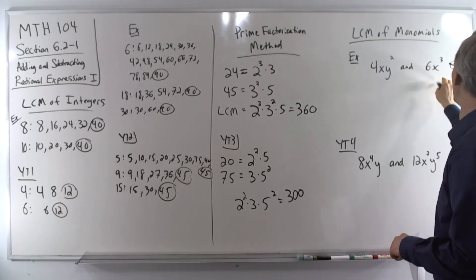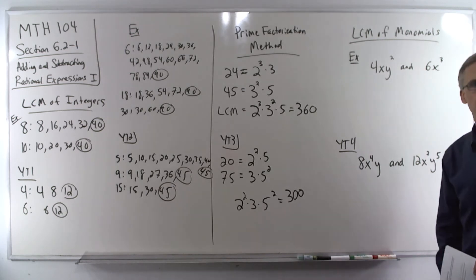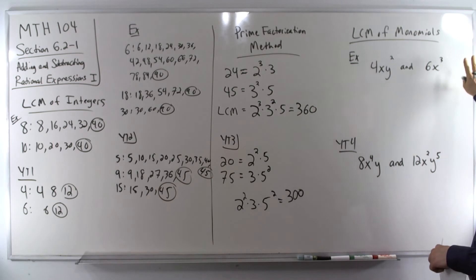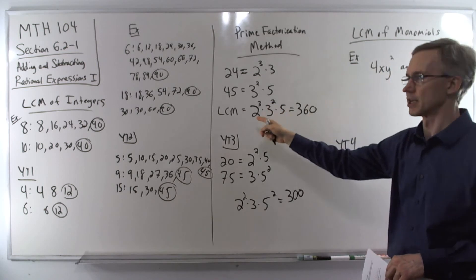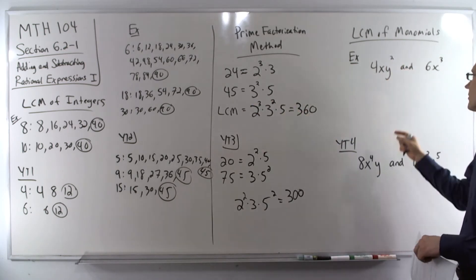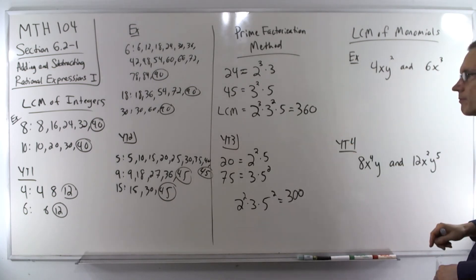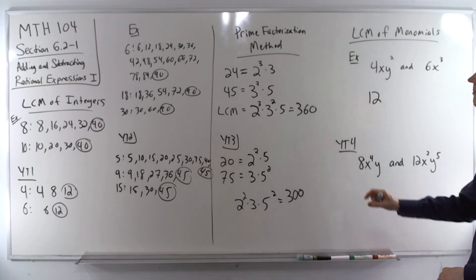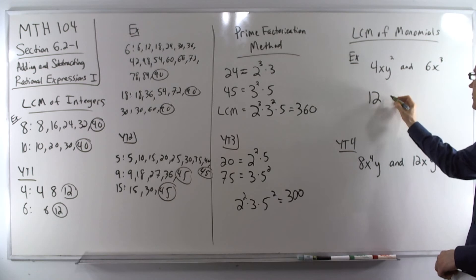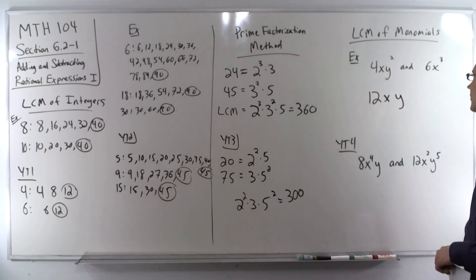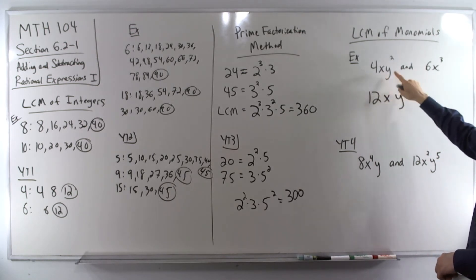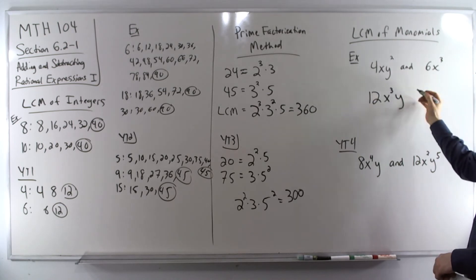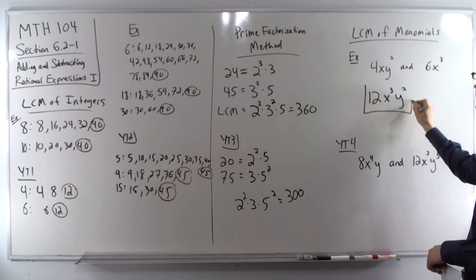Now we're going to be finding the LCM of polynomials. Since polynomials include coefficients, the first step in finding the LCM of monomials is to find the LCM of the coefficients using one of these two methods. We've got small numbers so we can list them out — the LCM of 4 and 6 is 12, so 12 will be the coefficient on the LCM. Now we do this with all the variables: list every unique base. It has x and y. For each variable, select the largest exponent amongst both terms. For x's, we have 1 here and 3 here, so we'll have x to the third in the LCM. For y's, we just have 2. So the LCM is 12x³y².